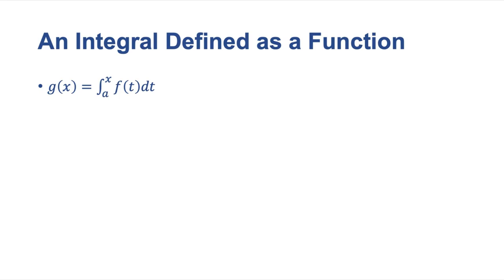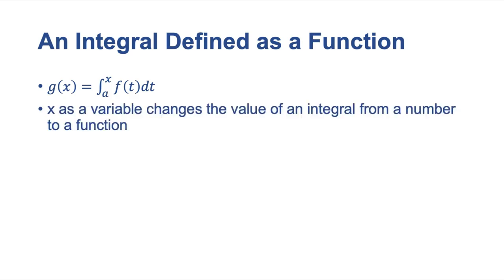So it's kind of defining the area under a curve as a function. So how the area changes as a function, right? So it says if x is a variable, so it changes the integral result from a number to a function. So we're going to get that interesting shift here.